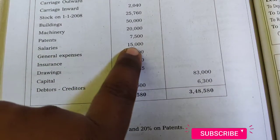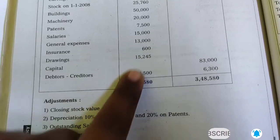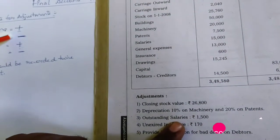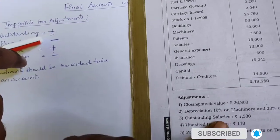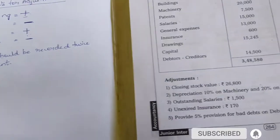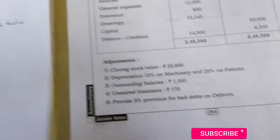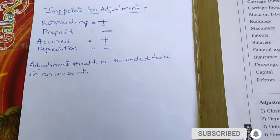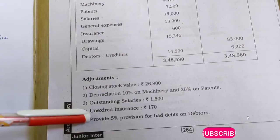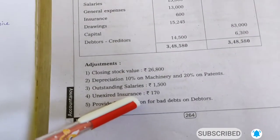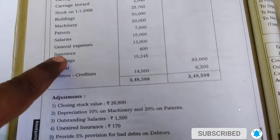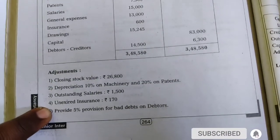For example, the salary amount is $15,000. If there are outstanding salaries, we should add that amount. Next, for 'prepaid' — prepaid is always minus.